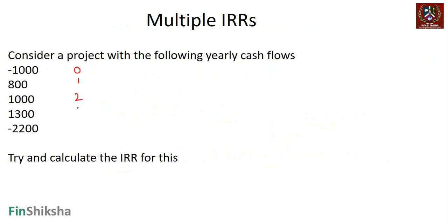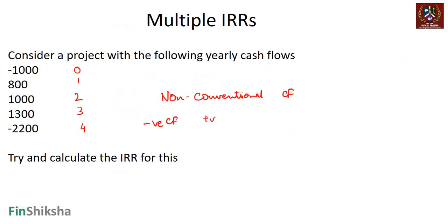The first thing we notice is that this is a non-conventional or unconventional cash flow. Conventional cash flows start with a negative cash flow followed by positive cash flows all the way through. The moment there is another negative cash flow within the series, that's an unconventional or non-conventional cash flow. Let's try and calculate the IRR for this kind of cash flow in our Excel file.